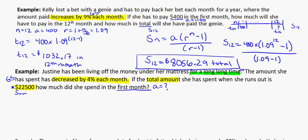So the amount she has spent has decreased by 4% each month. So let's work with that first. R is going to be equal to 1 minus 4 divided by 100. That's equal to 0.96. And that's between the range of negative 1 and 1 that we need for an infinite sum. So there's my R value.